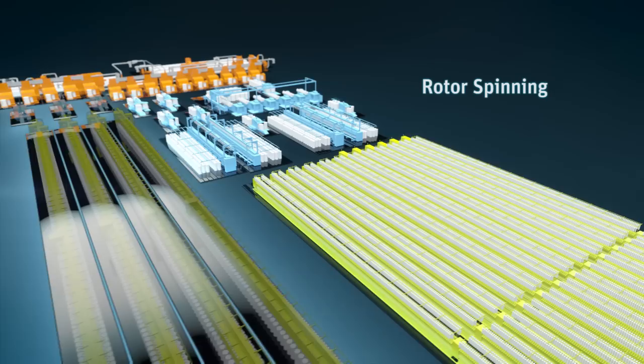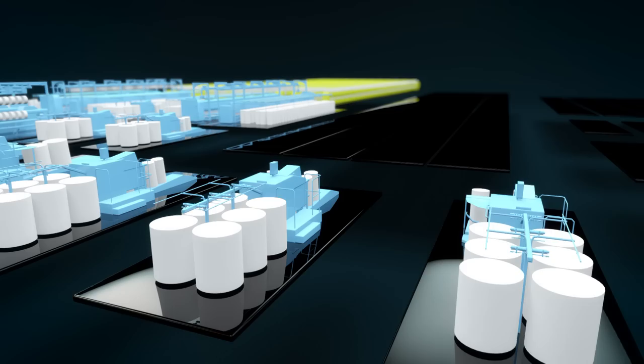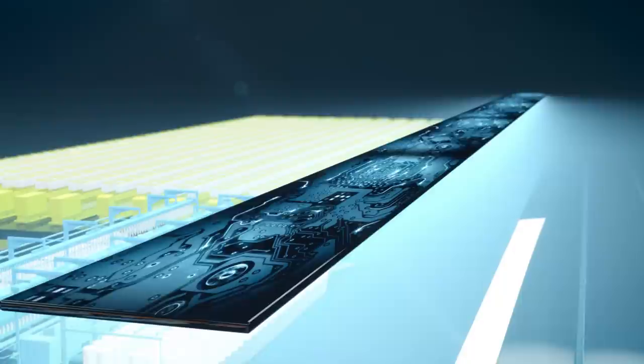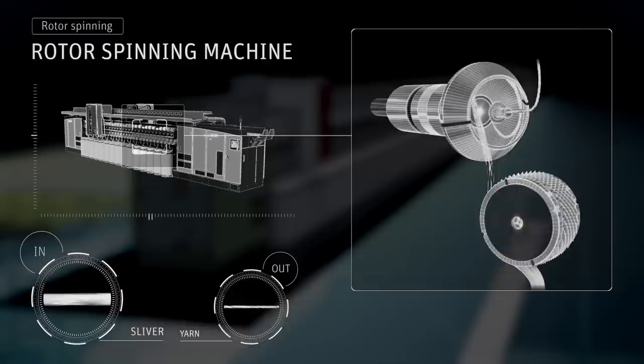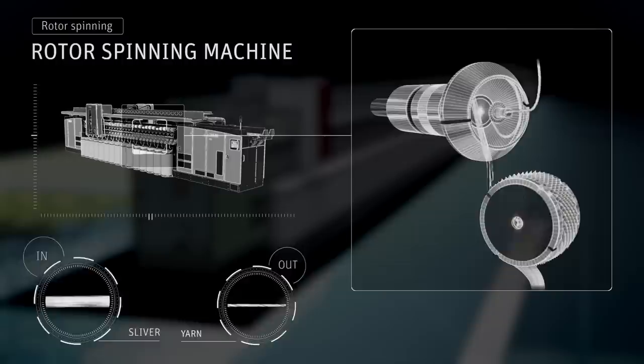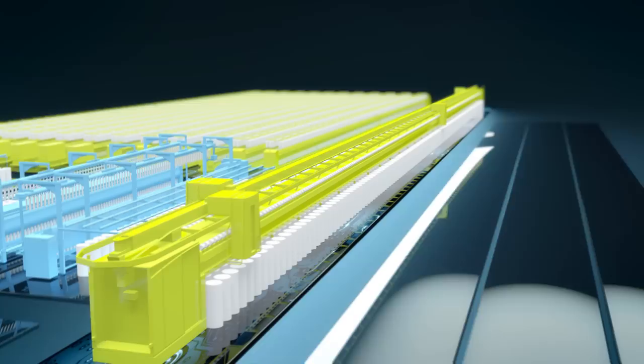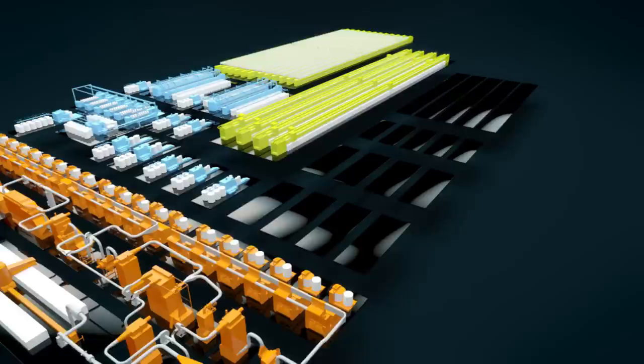The strength of rotor spinning lies in its high productivity and its great flexibility regarding raw material. After leaving the auto-leveler draw frame, the sliver is directly fed to the rotor spinning machine. The sliver is opened into single fibers and fed into the rotor. Through centrifugal force, the fibers collect in the rotor groove and there they form a strand. This is taken off via a central nozzle. The finished Kom4 rotor yarn is cross-wound onto packages.